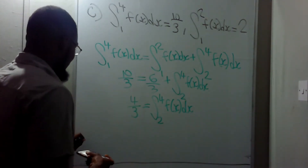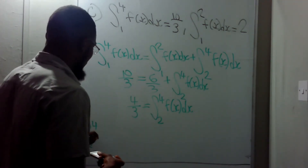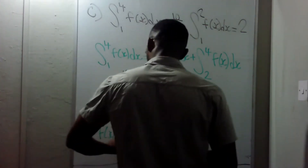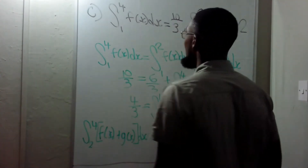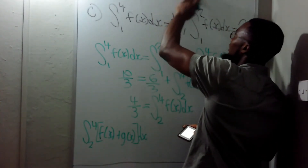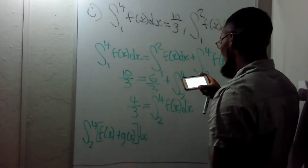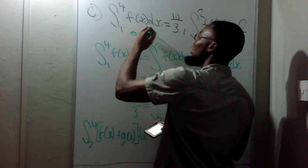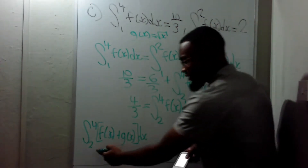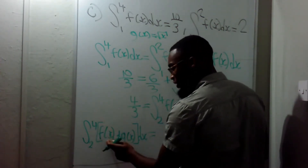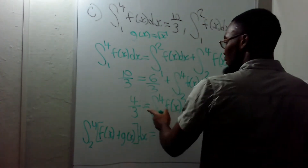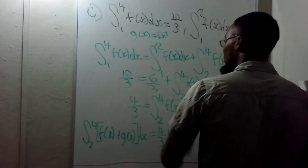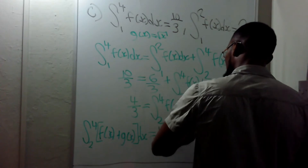The question wants us to evaluate the integral from 2 to 4 of [f(x) + g(x)] dx. We need to know what g(x) is — the question tells us g(x) = √x. So this equals the integral from 2 to 4 of f(x) dx, which is 4/3, plus the integral from 2 to 4 of √x dx, where √x is x^(1/2).